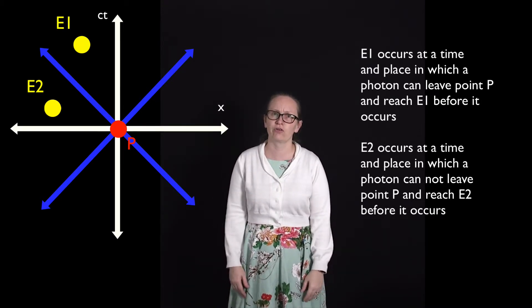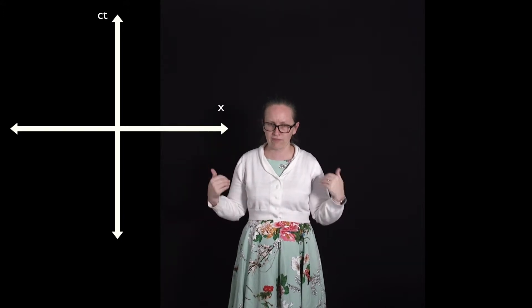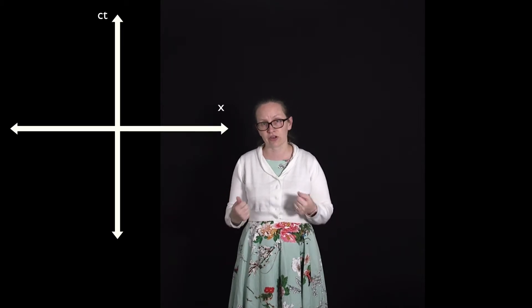Another nice thing to show on space-time graphs is world lines. World lines represent how something moves through time. So I've been standing here for quite some time now, so my x coordinate has not changed. So my world line on a space-time graph could be represented this way.